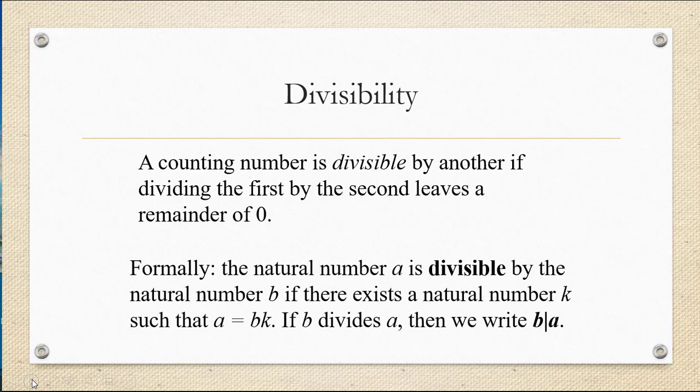The formal definition of what it means to be divisible is that the natural number a is divisible by the natural number b if there exists a natural number k such that a equals b times k. That sounds a little complicated, but all we're saying is that, for example,